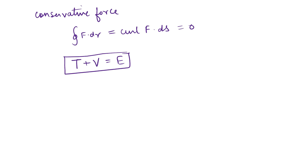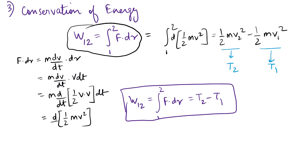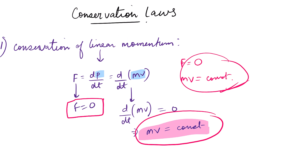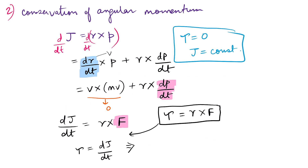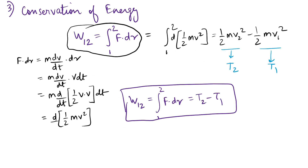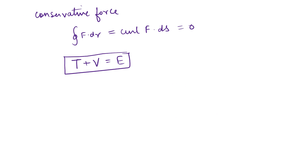For competitive exams and interviews, derivations might be important, but the results are more important. To recap: conservation of linear momentum states that in the absence of external force, linear momentum is conserved. Conservation of angular momentum states that in the absence of external torque, angular momentum is conserved. And conservation of energy states that the work done from one to two is the change in kinetic energy, and the total energy of the system is conserved.